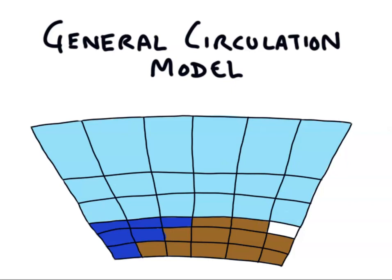A GCM represents the Earth as a grid of cells. This is kind of like how, if you zoom way in on a digital photo, you can see that it's made up of colored squares or pixels. A GCM tracks the state of each cell, for example, its temperature, and its interaction with other cells, for example, warm air flowing from one cell to its colder neighbor.